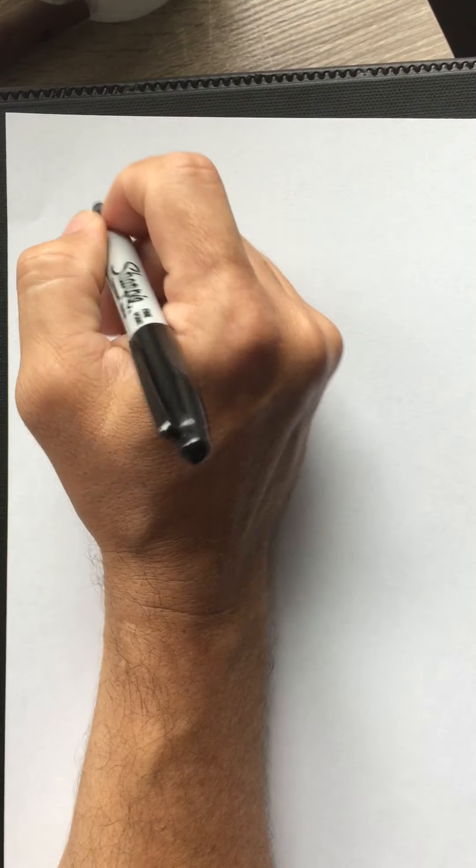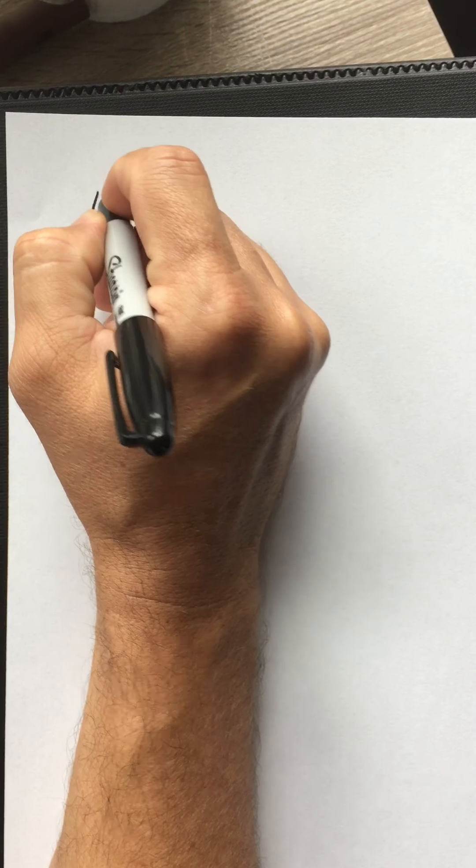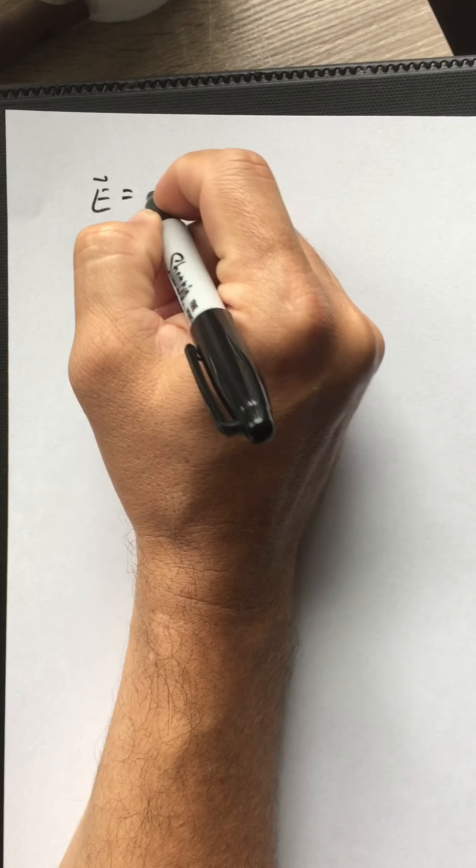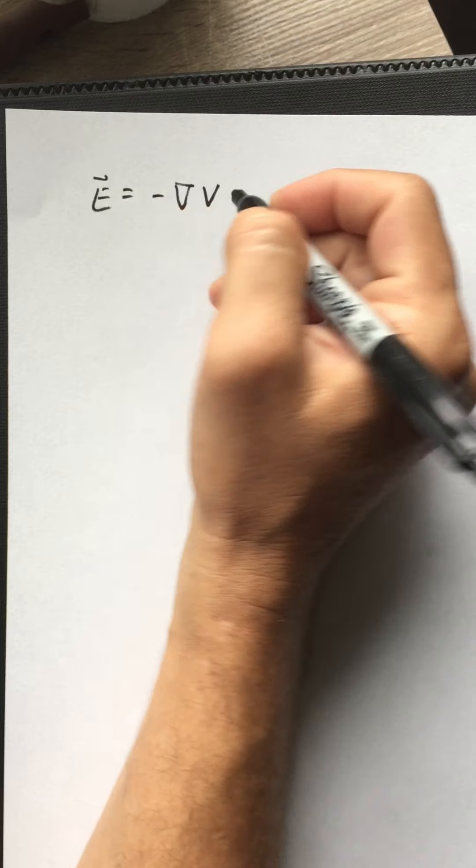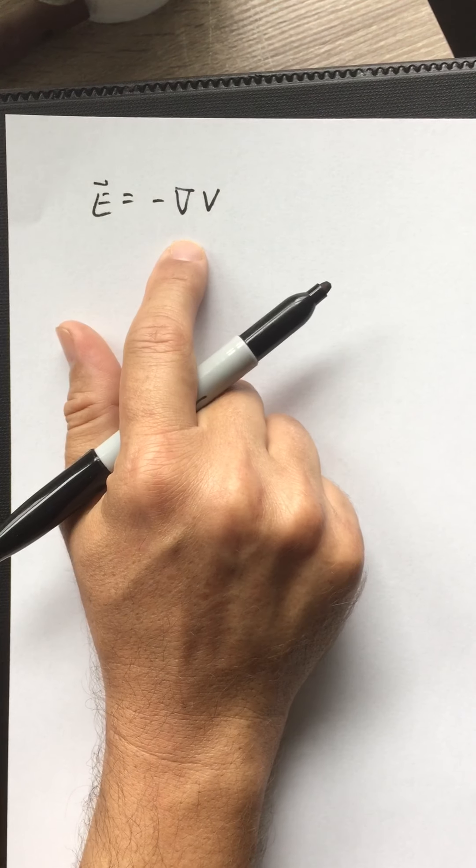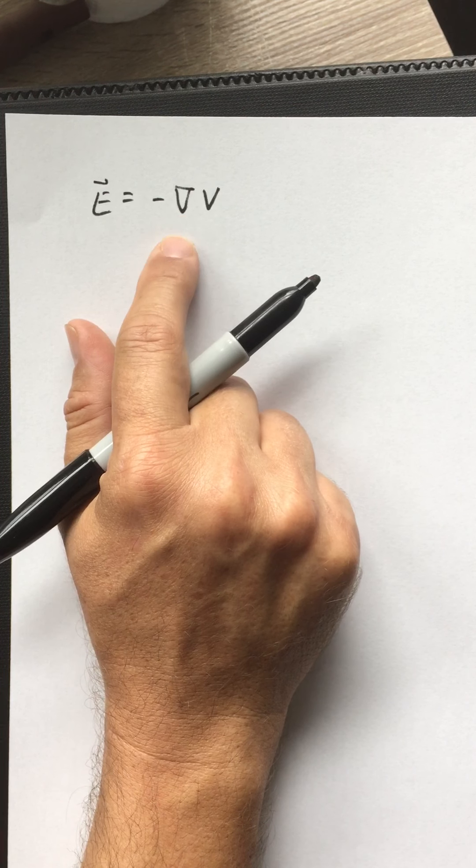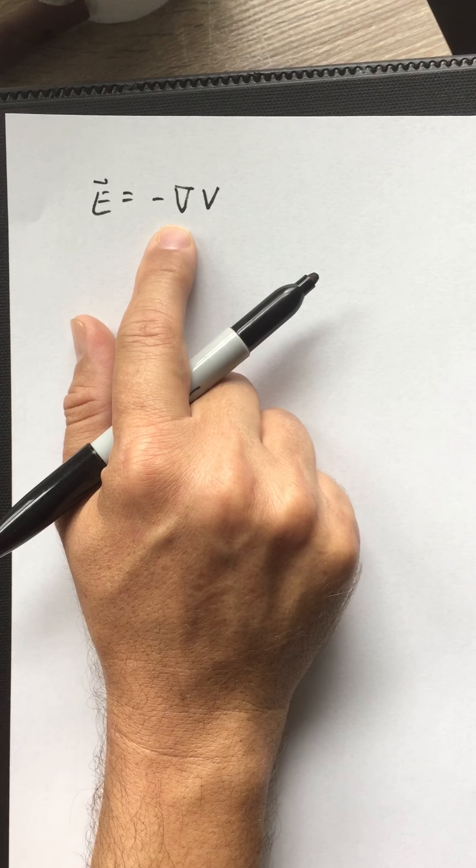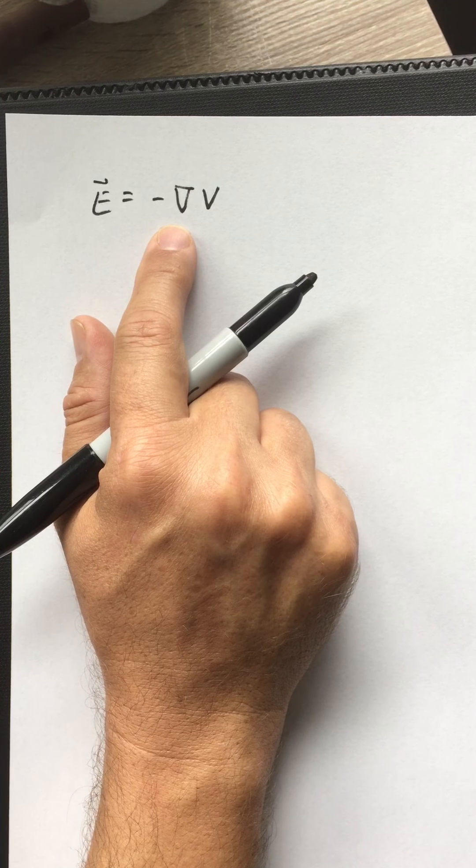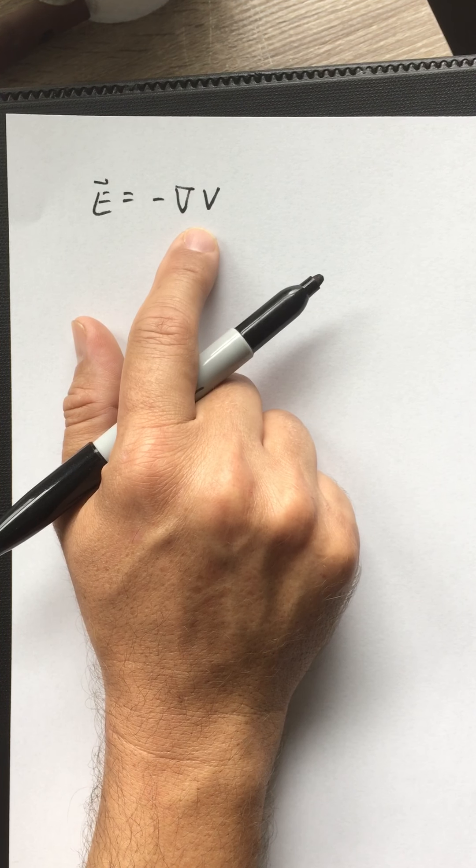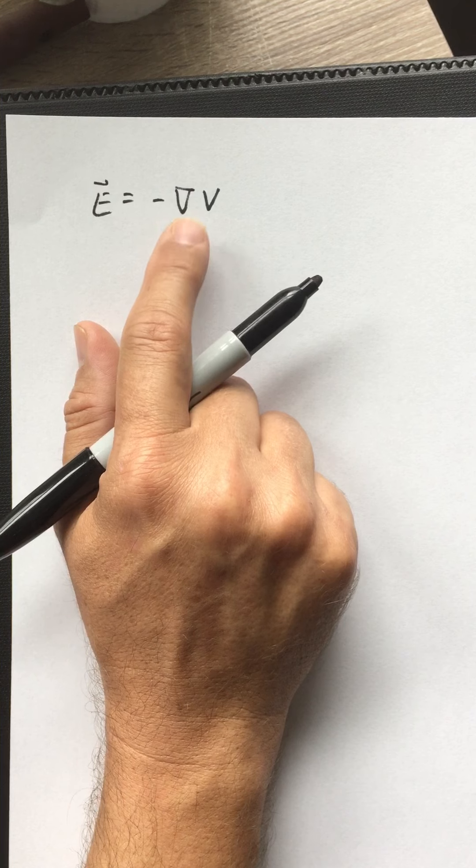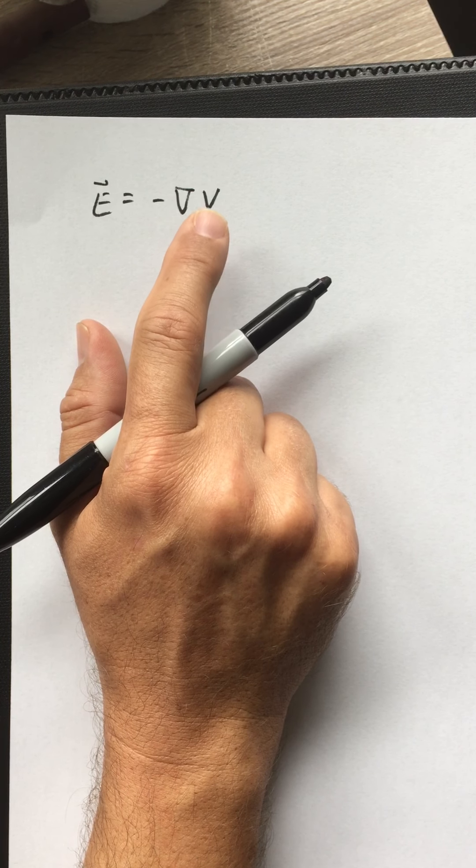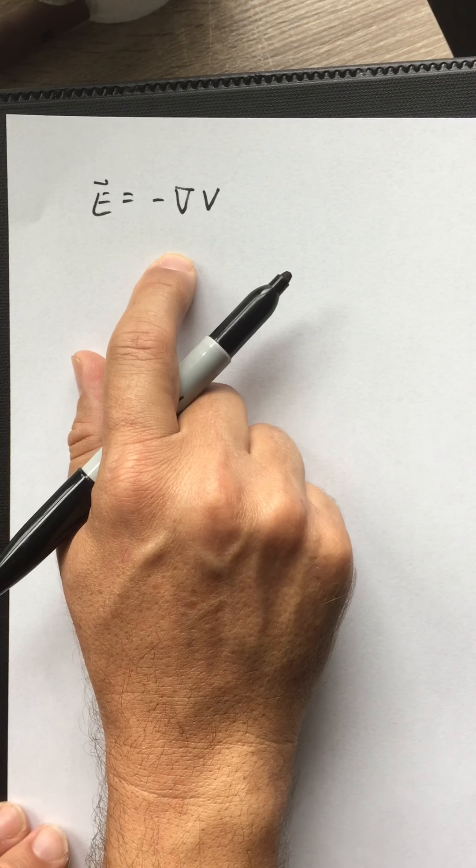Okay, now that we have seen this relationship that the electric field and the electric potential have this differential relationship. If you don't know what the symbol means, go back and watch the previous videos. This is the Dell operator, but it involves partial derivatives of the scalar potential.